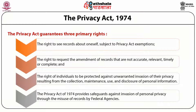The Privacy Act 1974 in the United States guarantees three primary rights and deals essentially with the use of records held by the government. It provides safeguards against invasion of personal privacy through the misuse of records by federal agencies.